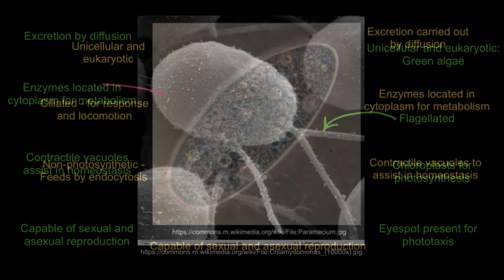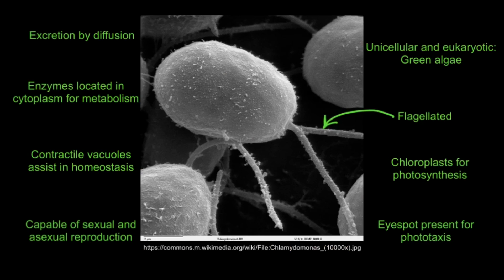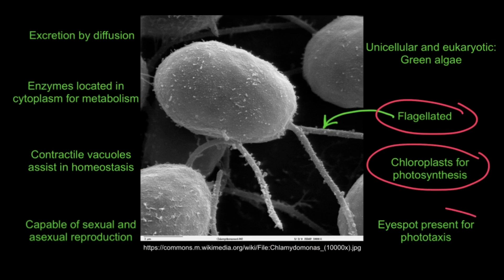So the main distinguishing features are that the paramecium is ciliated for response and locomotion, and not photosynthetic, feeding by endocytosis. While Chlamydomonas is flagellated, has chloroplasts for photosynthesis, and has an eye spot for phototaxis.